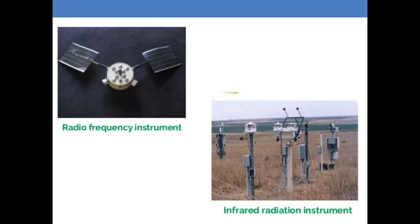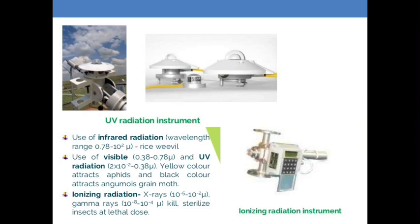In this feature you can see a radio frequency instrument and an infrared radiation instrument that helps increase the temperature to near 80 degrees centigrade. With the help of this radiation, we can make insects unfit for mating and reproduction. There is also a UV radiation instrument and an ionizing radiation instrument. The infrared radiation instrument helps reduce the rice weevil population. Yellow color attracts aphids, and black color attracts the angoumois grain moth. Ionizing radiation like gamma rays can sterilize many insects and reduce the pest population.